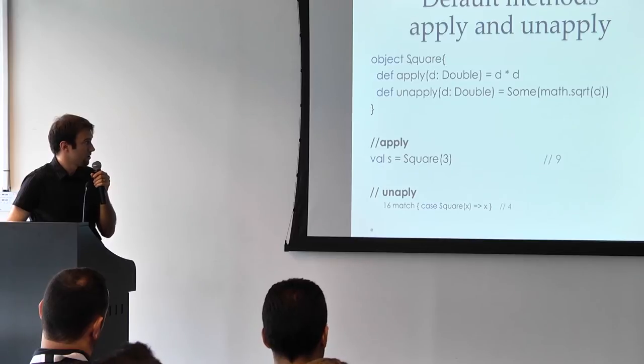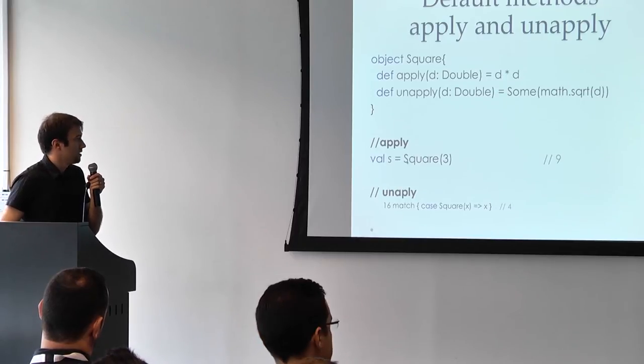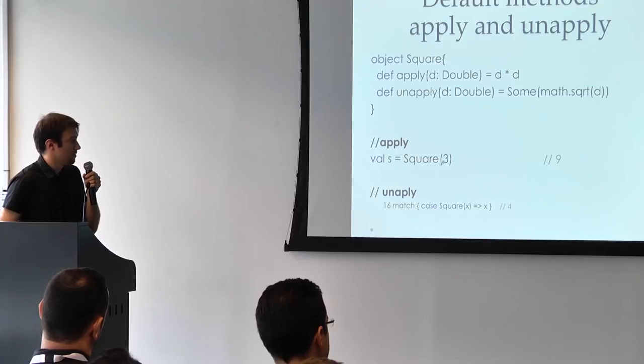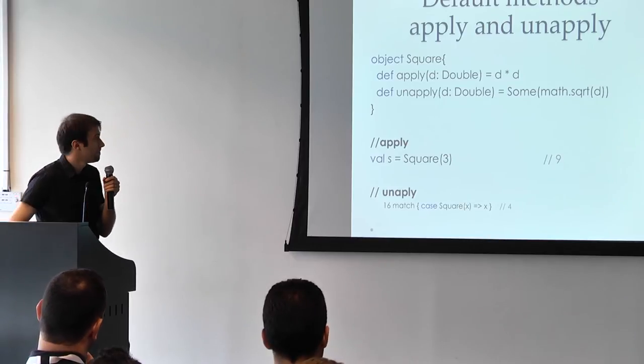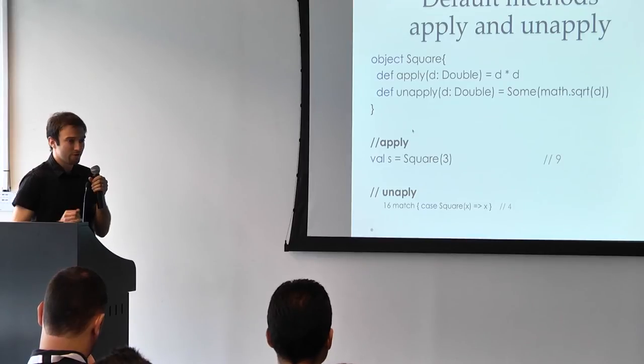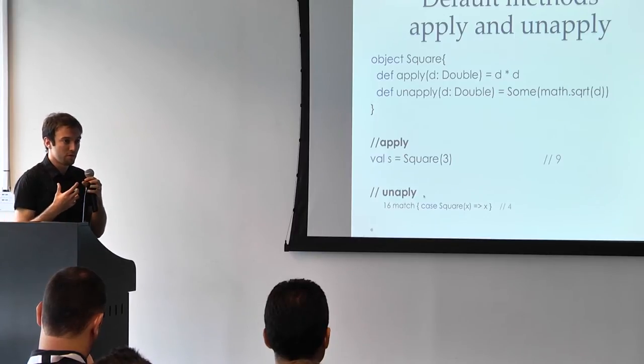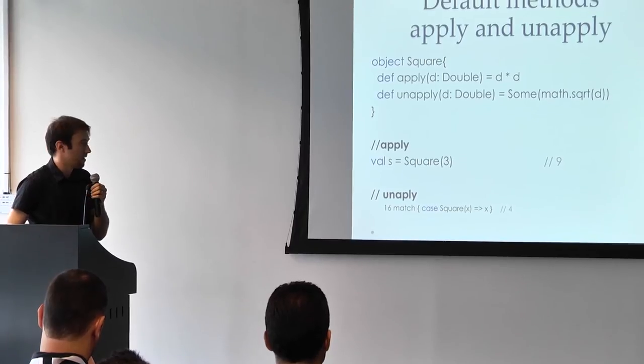So if we have a square object, and we want to basically just compute the square of a number, we can just call square and pass 3, and it's going to be equivalent to square.apply3. Unapply is the concept of actually an inverse function or a decomposition function, and it's used in pattern matching. So pattern matching basically allows us to extract the contents of an object in a very functional and elegant way.